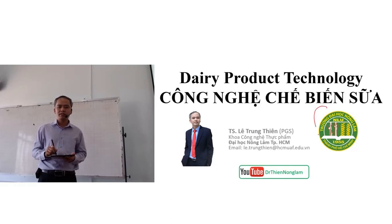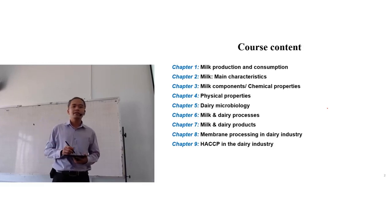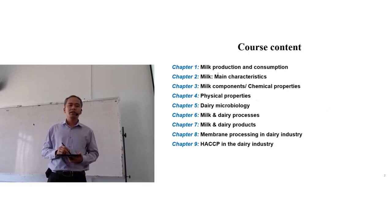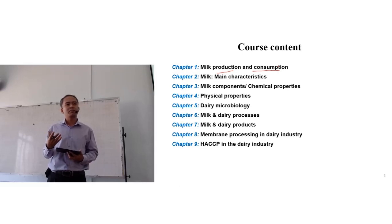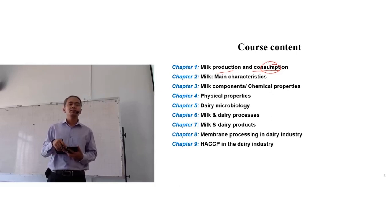You already know you are at Nong Lam University. These are the nine chapters we will work together. Chapter 1 gives a short introduction on milk production and consumption. Production is the volume — the amount of milk the whole world or Vietnam produces. Normally production is a little bit higher than consumption because from production to consumption there would be some loss somewhere on the way.